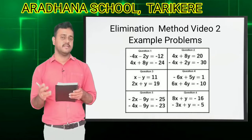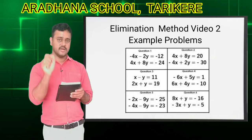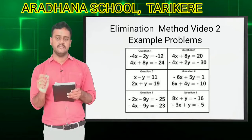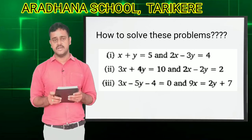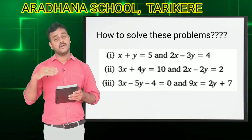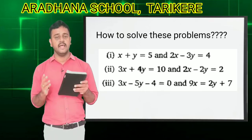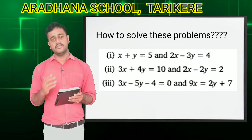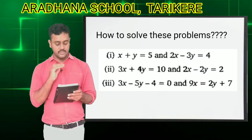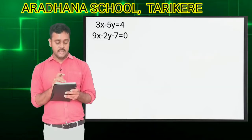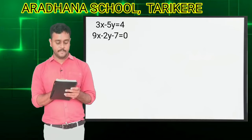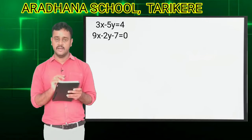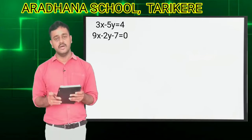If you want to eliminate x or y, you have to see the coefficients. If the coefficients are same, we can eliminate easily. In this video, I will teach how to eliminate even when the coefficients are different. We can eliminate by using this method. For example: 3x minus 5y is equal to 4, and 9x minus 2y minus 7 is equal to 0.